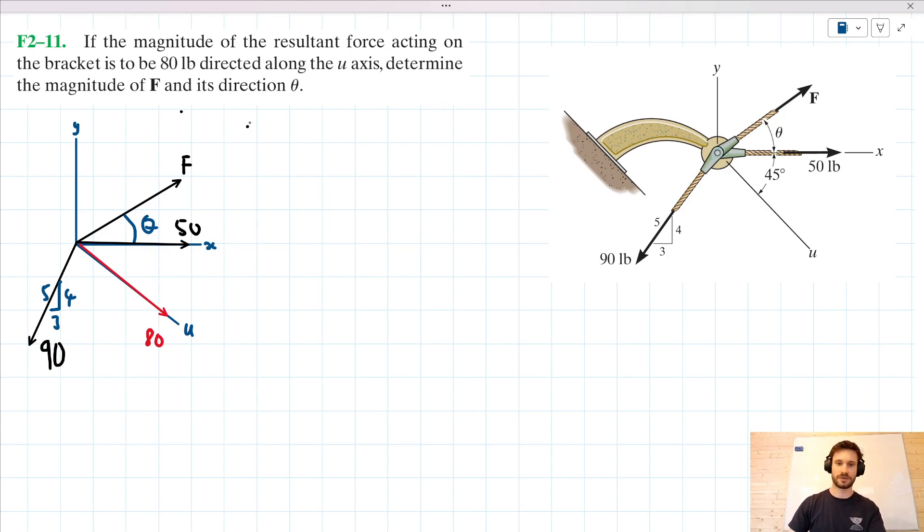So let's first determine the x and y components, the horizontal and vertical components of our 80-pound force here. We can describe that as F_Rx, so the horizontal component of our 80-pound result force here we can say is equal to 80 cos 45. And we can say F_Ry is equal to minus 80 sin 45, minus as it's acting in the negative vertical direction.